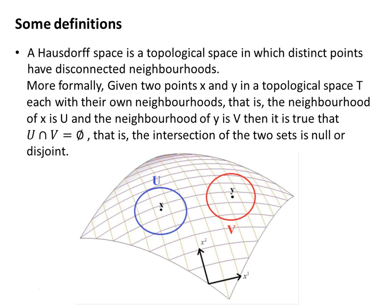The Hausdorff space is a topological space in which distinct points have disconnected neighborhoods. More formally, given two points X and Y in a topological space T, each with their own neighborhoods — the neighborhood of X is the set U, and the neighborhood of Y is the set V — then the intersection of these two sets is the null set or empty set.